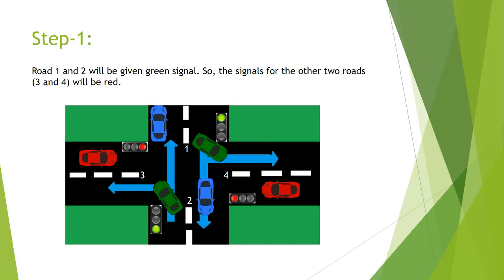Since this is a 4-way intersection, there are 4 different steps. First of all, the signals for roads 1 and 2 will go green. Generally the other roads will have a red signal.